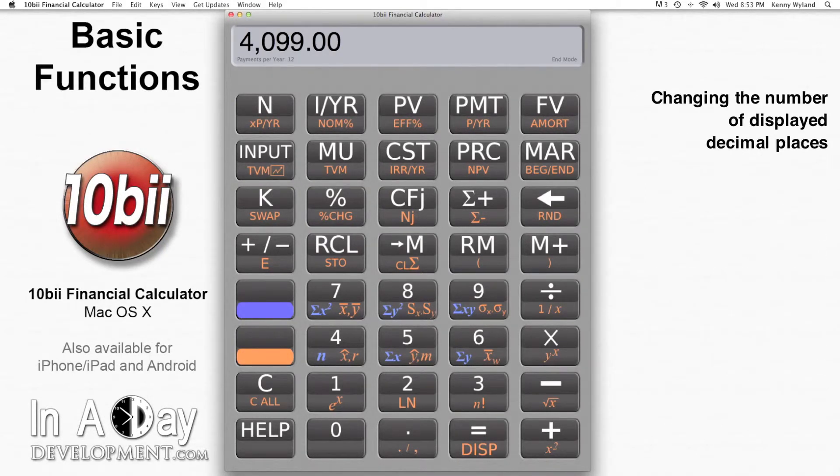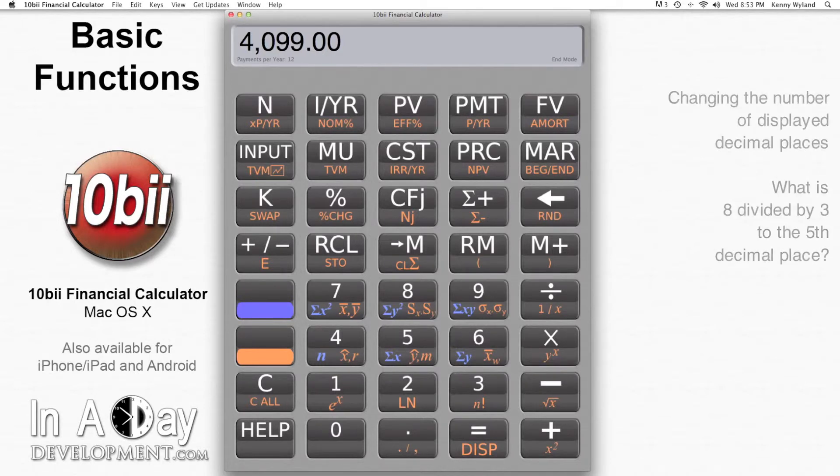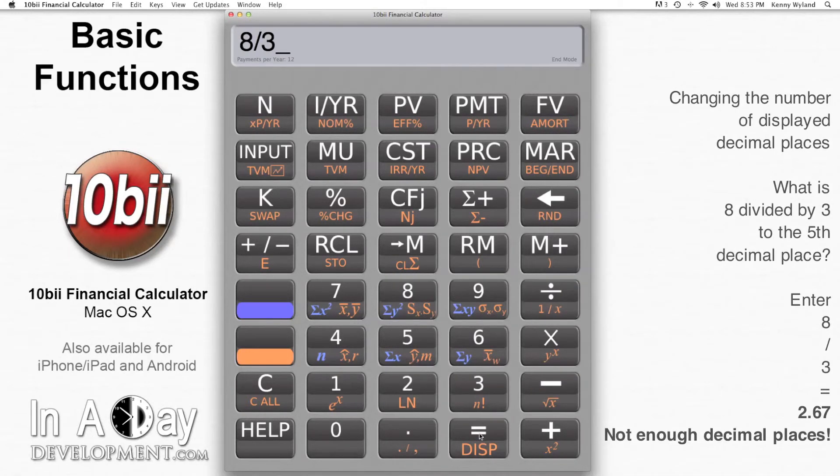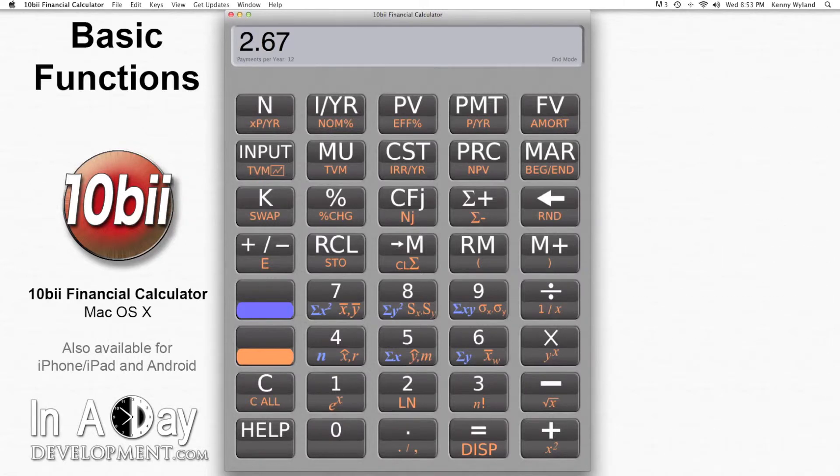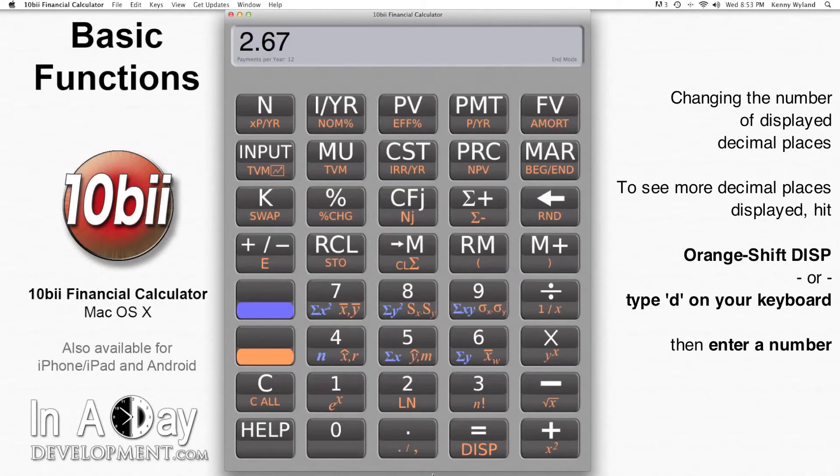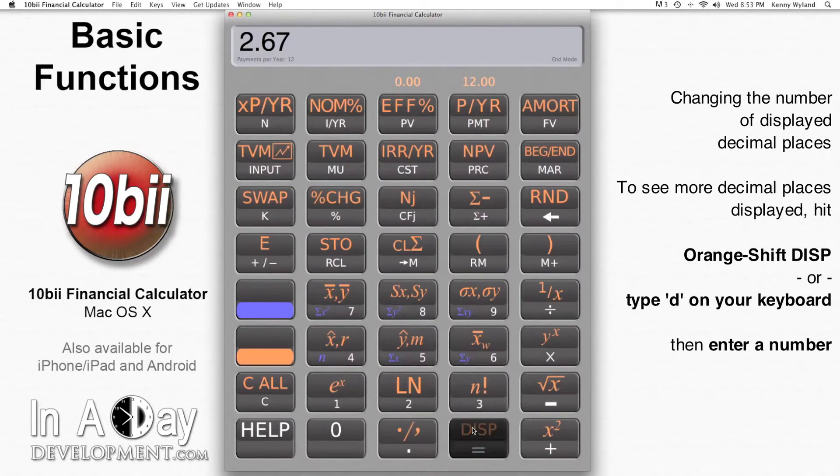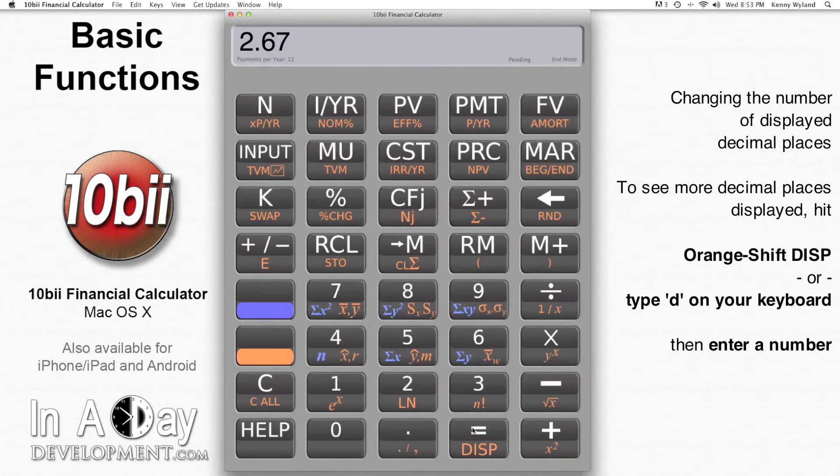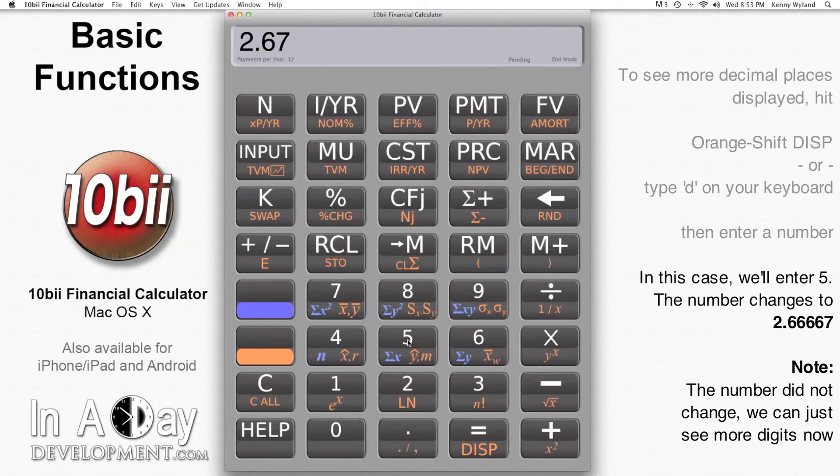Now let's say we're dealing with numbers with a lot of decimal places. For example, what's 8 divided by 3 to the 5th decimal place? We type in 8 divided by 3 and hit equals, but get 2.67. Not enough decimal places! To see more decimal places displayed, we hit orange shift display, or type D on your keyboard, and then enter a number. In this case, we'll enter 5. We do that, and voila! The number changes to 2.66667. Note that the number didn't change, we're just looking at more digits now.